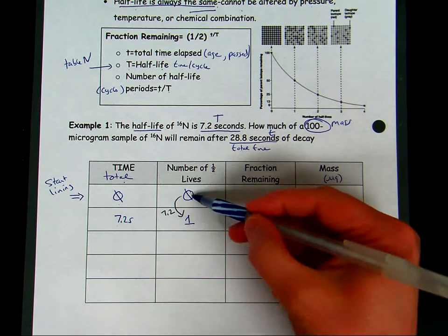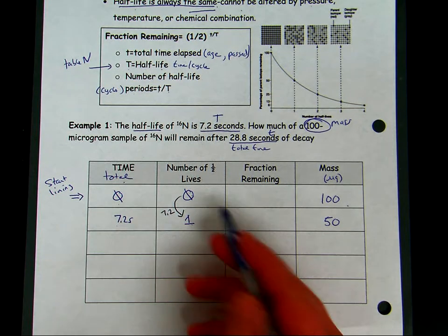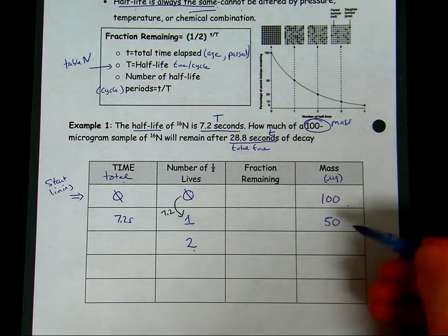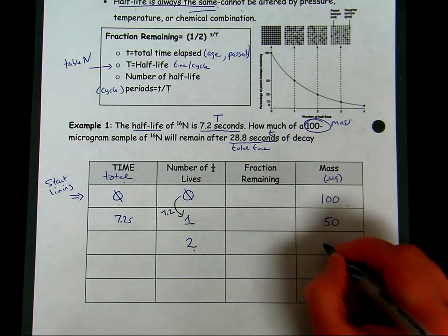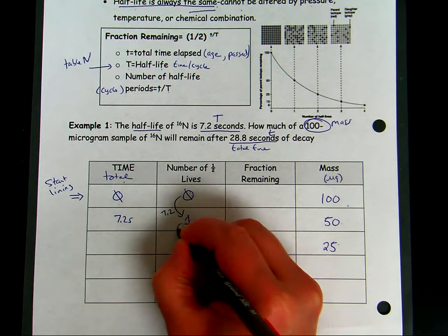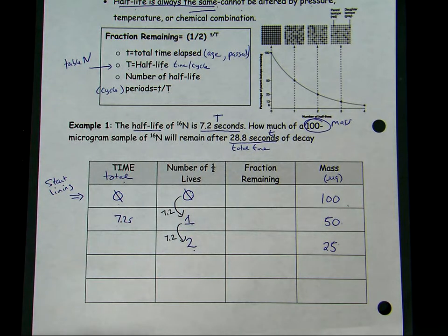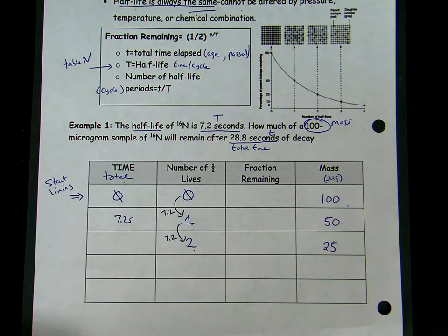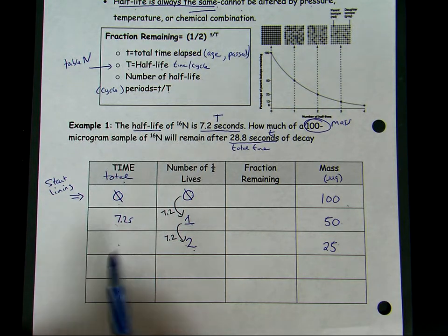Our sample eventually will go through a second cycle, and when it reaches finishing its second cycle, there's no longer 50 micrograms of the sample remaining, but now only 25 micrograms. To go from cycle one to cycle two, it requires an additional 7.2 seconds to occur. Every cycle requires 7.2 seconds, so now I have to add another 7.2 seconds to the total time for my new total time, which is 14.4 seconds.